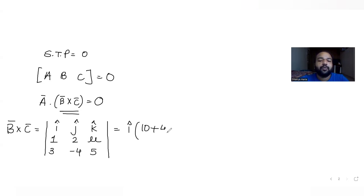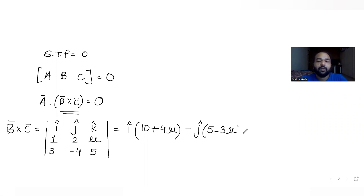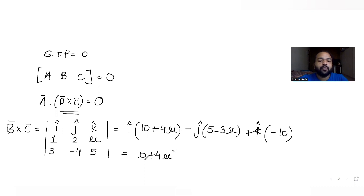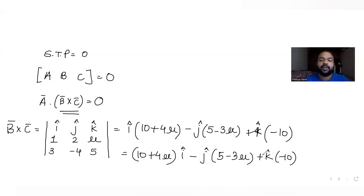Computing this determinant gives us: i-hat component is (10 - (-4mu)) = (10 + 4mu), minus j-hat component is (5 - 3mu), and plus k-hat component is minus 10. So b cross c equals (10 + 4mu) i-hat minus (5 - 3mu) j-hat minus 10 k-hat.